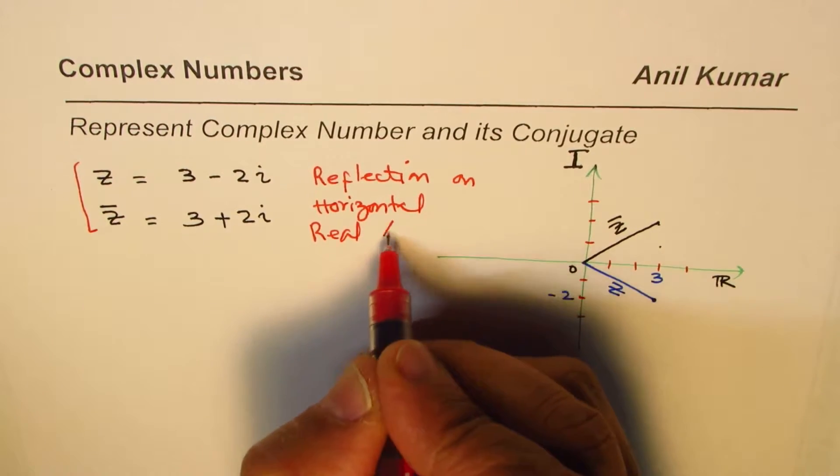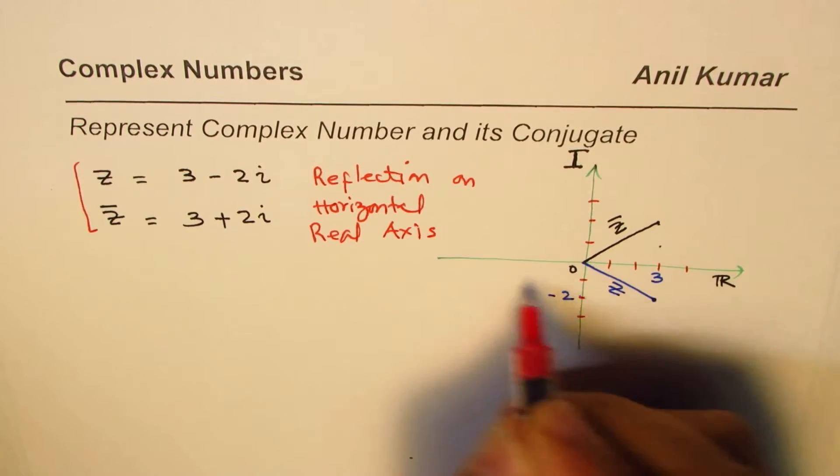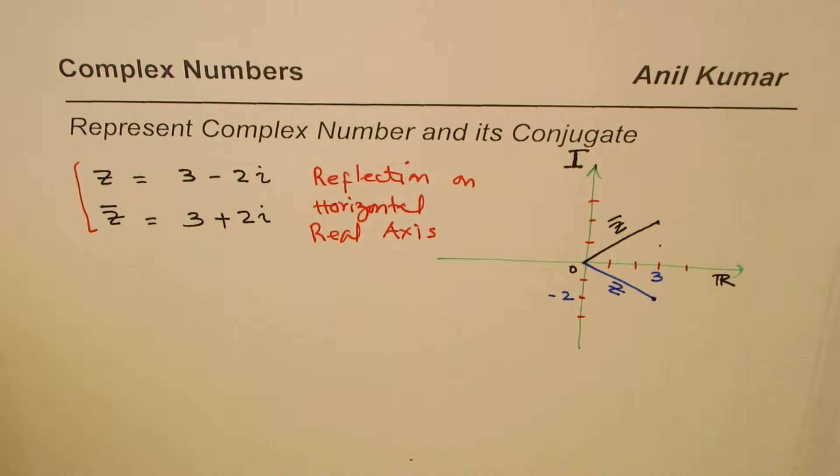I'm not writing x-axis, just real axis. So reflection on this axis gives you the conjugate. That is how it works.